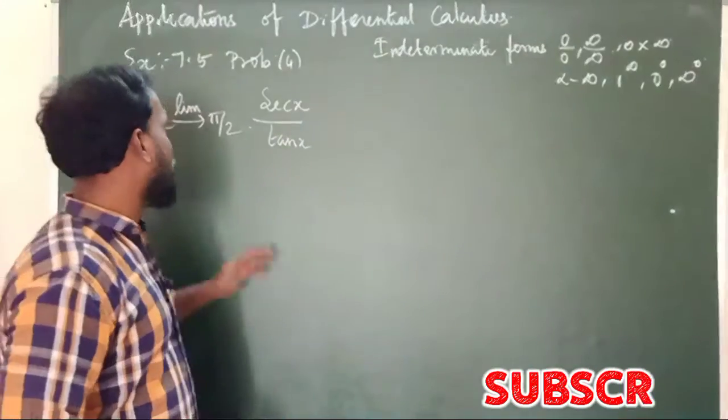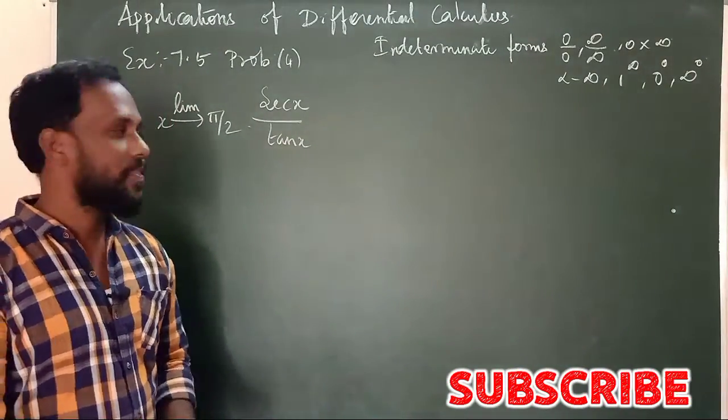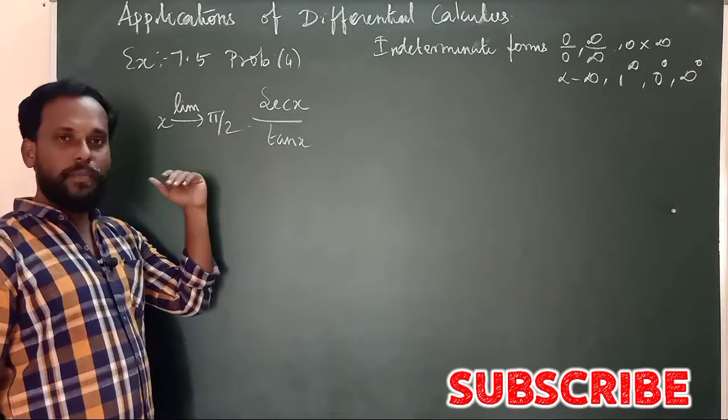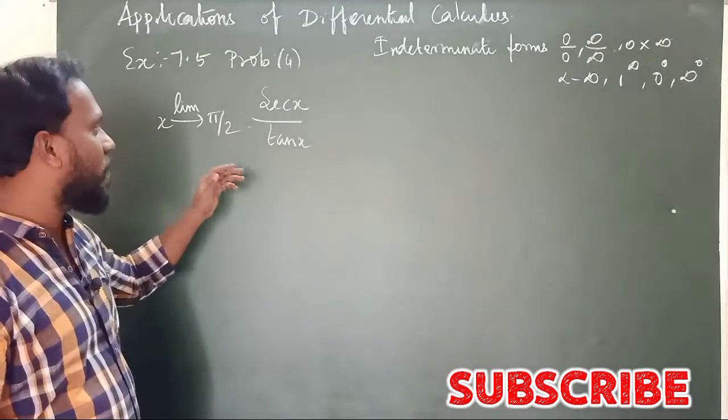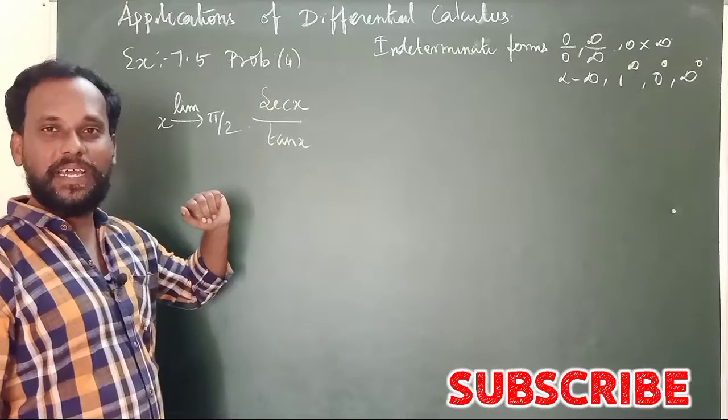Now, problem number 4, exercise 7.5. x tends to π/2, the limit x tends to π/2, sec x by tan x.